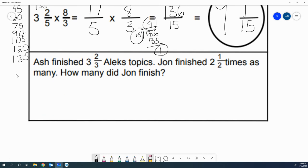Last but not least, you've got a word problem. Ash finished 3 and 2 thirds Alex topics. John finished 2 and a half times as many. How many did John finish? Most important thing to remember is we have times as many. That means you're just going to multiply the two numbers. So you're going to be multiplying 3 and 2 thirds times 2 and 1 half.